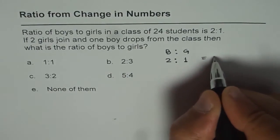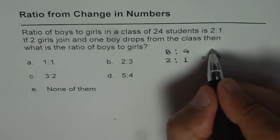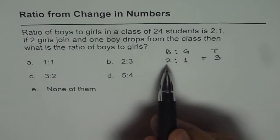And that means if there are 3 students, let's write total here, t for total, then there will be 2 boys and 1 girl.